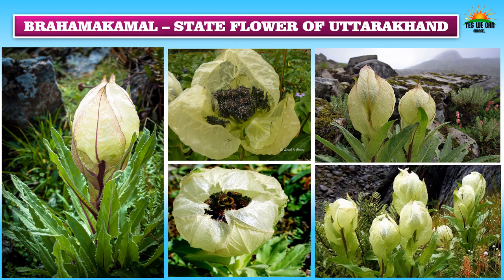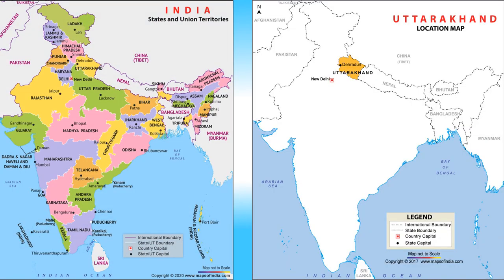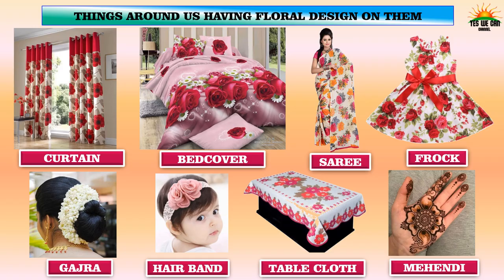Since we are talking about the Valley of Flowers in Uttarakhand, do you know which is the state flower of Uttarakhand? Yes, it is Brahma Kamal. This is the map of India and here is Uttarakhand.